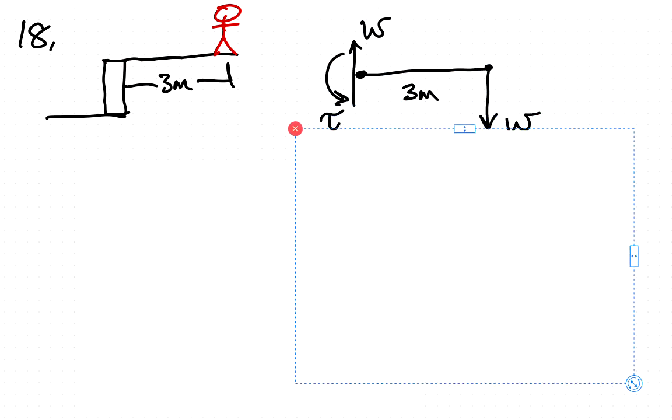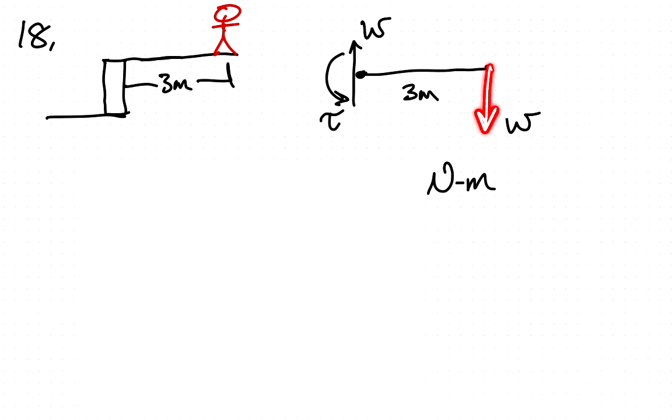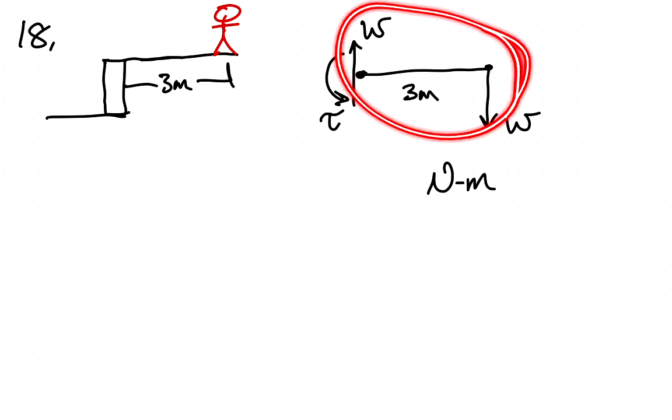So we can draw a free body diagram of that. We have the weight of the mutineer at the end, and when we detach it here from the side of the ship, we have a force and a torque acting. This force must be equal to this force so that we have equilibrium.